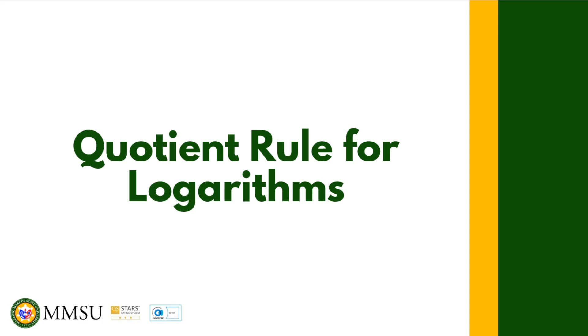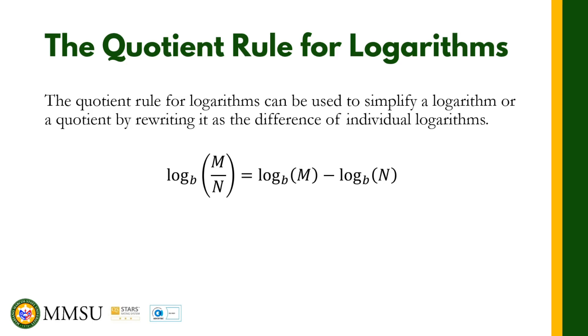What is the quotient rule for logarithm? The quotient rule for logarithms can be used to simplify a logarithm or a quotient by rewriting it as a difference of individual logarithms. So we have logarithm of M divided by N in base B can be written as the logarithm of M in base B minus the logarithm of N in base B.